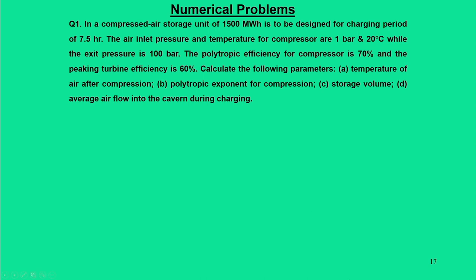We will now solve a numerical problem to get a feel for the quantitative numbers. This problem is about a compressed air storage unit designed for a charging period of 7.5 hours. Initial conditions: air at 1 bar and 20 degrees centigrade. Exit pressure is 100 bar. Polytropic efficiency for the compressor is 70 percent. The peaking turbine efficiency is also 70 percent. We need to find: temperature of air after compression, polytropic exponent n, storage volume, and average volumetric air flow rate during charging.